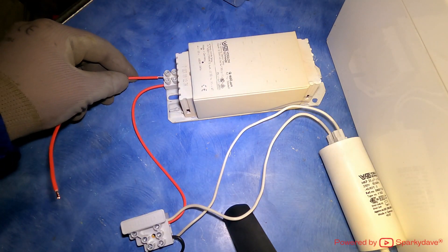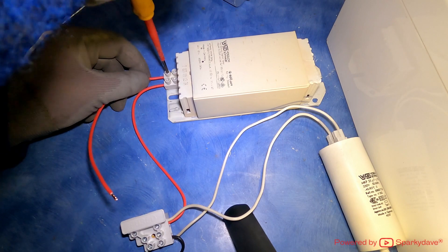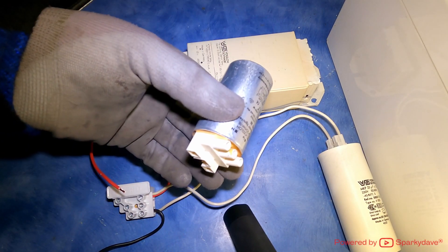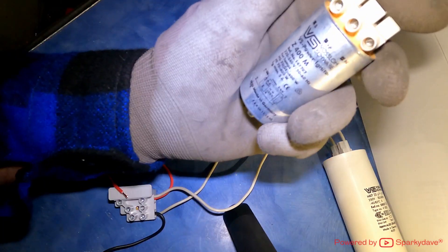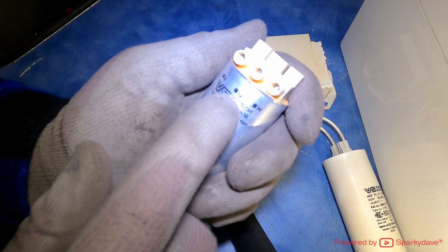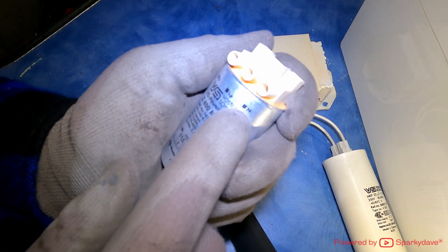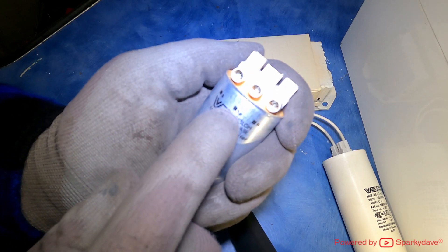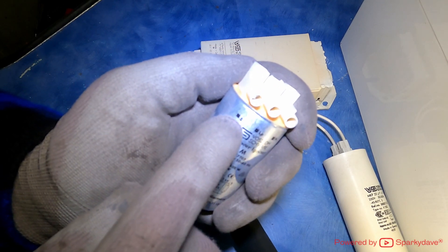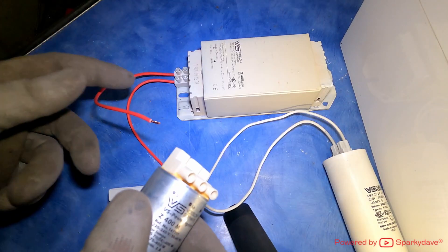Now we're going to have a phase cable coming out of the ballast, and then at this point we're going to connect the igniter into the circuit. On the igniter here you'll see three terminals: a B, an LP, and a N. N is neutral, LP is the output to the lamp, and B is the input from the ballast. So this cable coming out of the ballast will go into the B terminal.